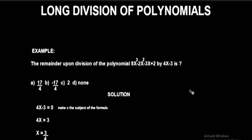Ensure you stay to the very end of this video. You guys are going to learn a lot. Let's get started. The question I have here says: the remainder upon division of the polynomial 8x³ - 2x² - 3x + 2 by this linear expression 4x - 3 is what? These are the options.